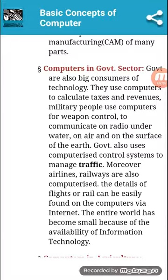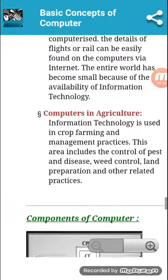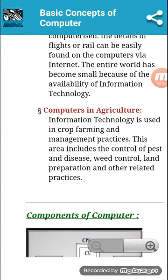Airlines and railways are also computerized. Details of flights and rail services can be easily found on the computer via the internet. The entire world has become small because of the availability of information technology. Computers in agriculture: information technology is used in crop farming and management practices, including the control of pest and disease, weed control, land preparation, and other related practices.